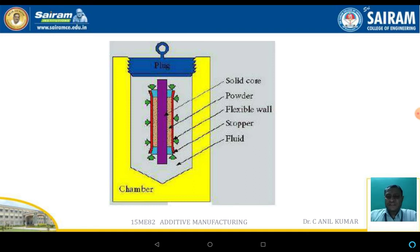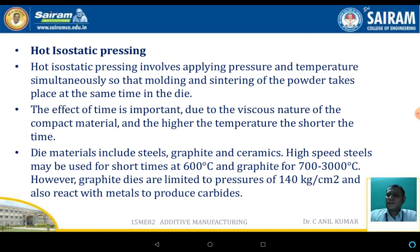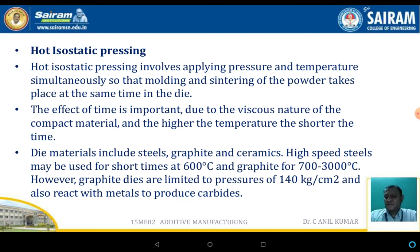Hot isostatic pressing involves applying pressure and temperature simultaneously so that compaction and sintering of the powder take place at the same time in the die. Time is a major factor — at higher temperatures the time required is shorter. Die materials include steel, graphite, or ceramic. High-speed steel may be used for shorter times at 600°C, graphite for temperatures up to 3000°C, though graphite dies are limited to pressures of 140 kg/cm².